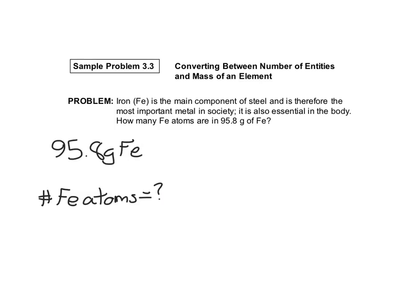And in the previous problem, I just mentioned that we could use this number as a clue. Anytime they're asking for the number of things, I know I'm going to have to use Avogadro's number as a conversion factor. So I'm going to go ahead and write that down. 6.022 times 10 to the 23 entities per mole.